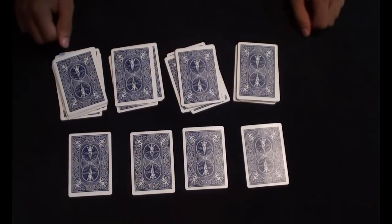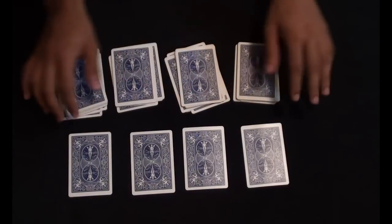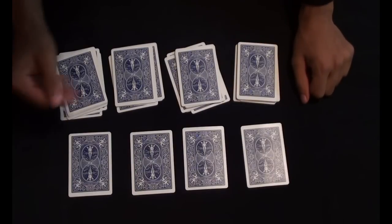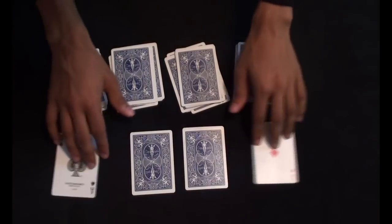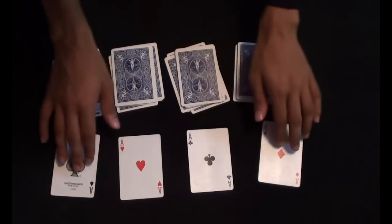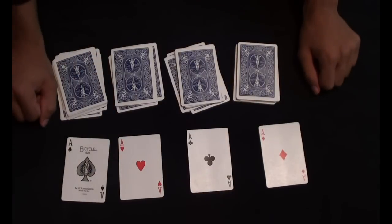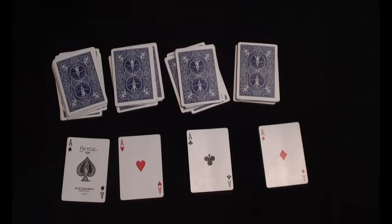So in the beginning we shuffled the cards, then we asked the spectator to cut the cards randomly, and you saw that everything was fair. But still, we managed to find the four aces. Thank you, my friends. Thanks for watching. Let me know what you think about this trick in the comment section below.